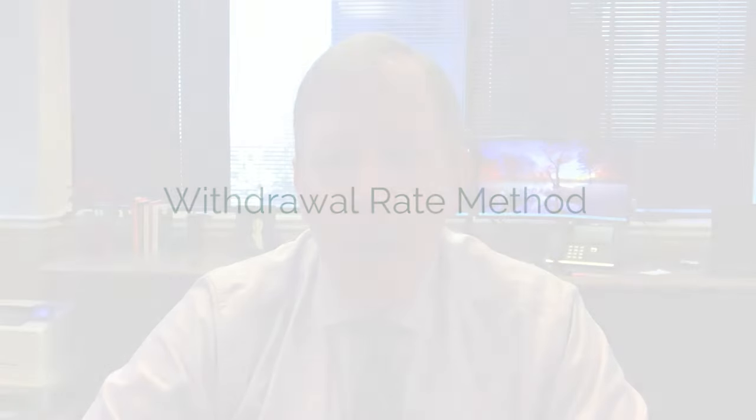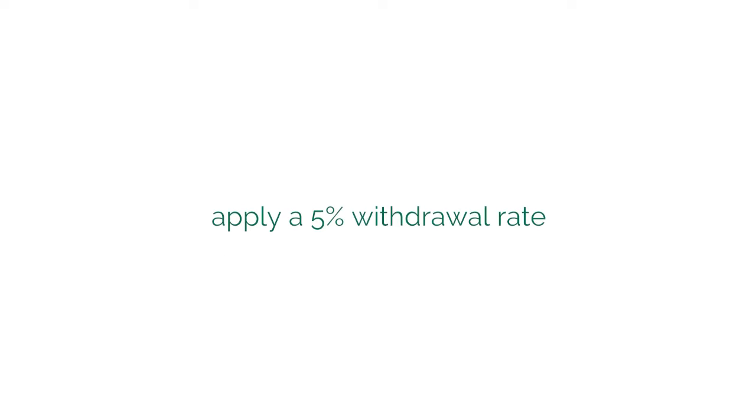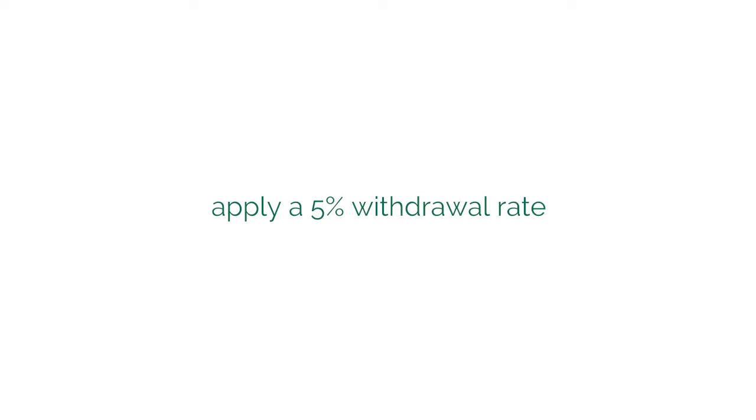This method is popular because it's easy to understand. The retiree takes a certain percentage of their retirement assets on an annual basis. For instance, if they have accumulated three million dollars for retirement and apply a five percent withdrawal rate, they would take a hundred and fifty thousand dollars each year from their accumulated assets.